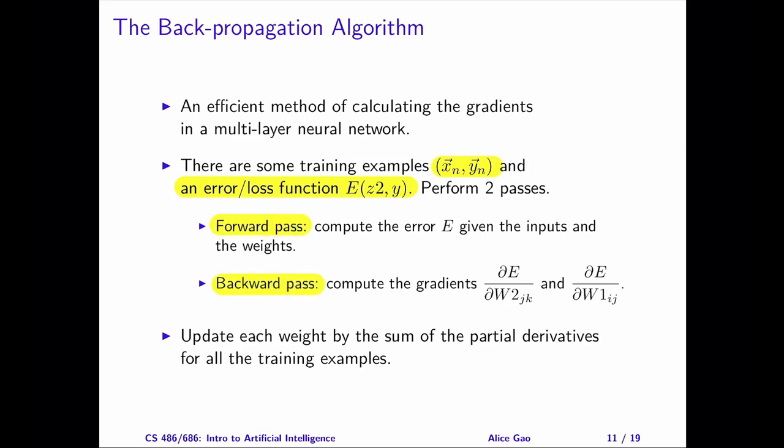The forward pass takes the input values x, the current weights w1 and w2, and calculates the error or loss e between the actual output value z2 and the expected output values y. The backward pass computes the gradients, which are the partial derivatives of the error function with respect to w2 and w1. For our network, the forward pass flows from left to right, and the backward pass flows from right to left. For each training example, we will calculate one gradient for each weight. Then, to update each weight, we need to add the gradients for this weight for all the training examples, and update the weight proportional to the sum of the gradients.